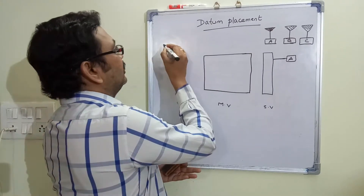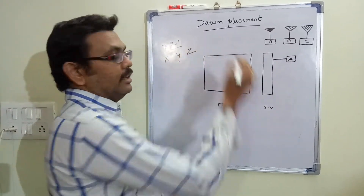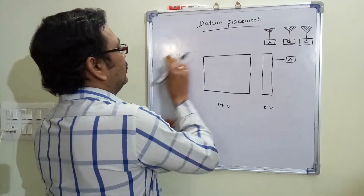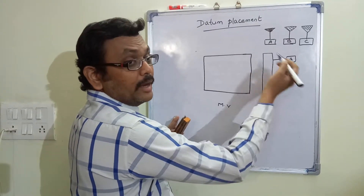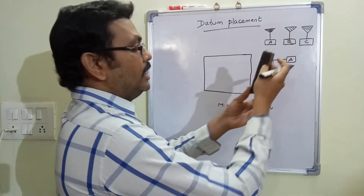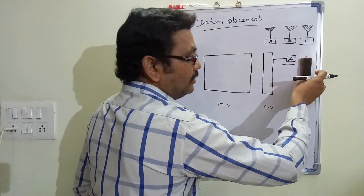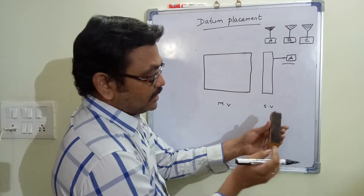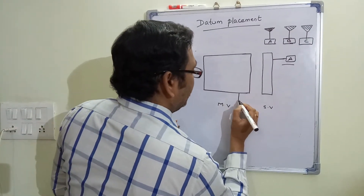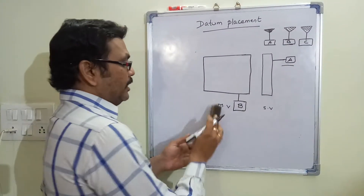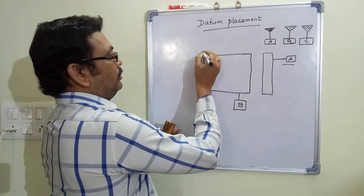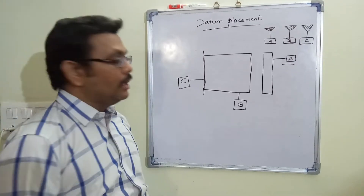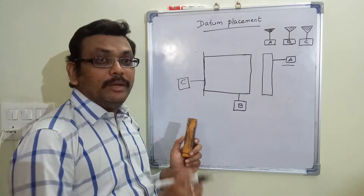As I said, by the three-two-one principle, one direction is arrested with datum A, and then we fix the next directions. The next mating component plays a major role. I know this component is going to assemble like this — this surface is the mating surface, so I take this as datum B. And obviously this surface is taken as datum C. Remember, all three datums should be perpendicular to each other.